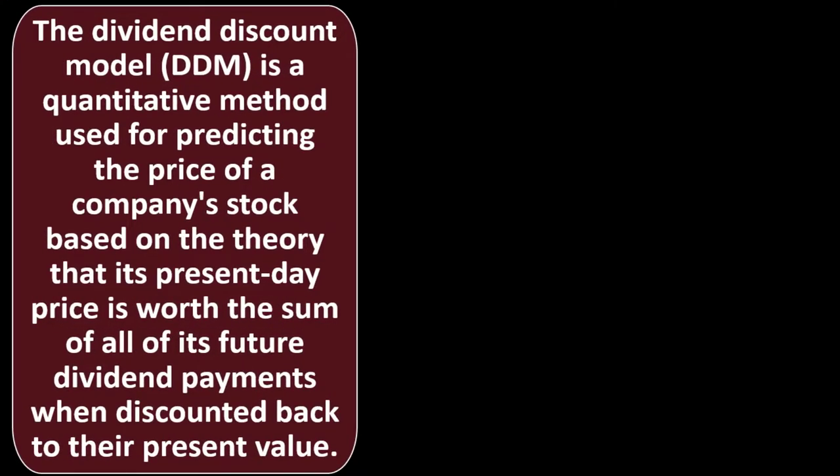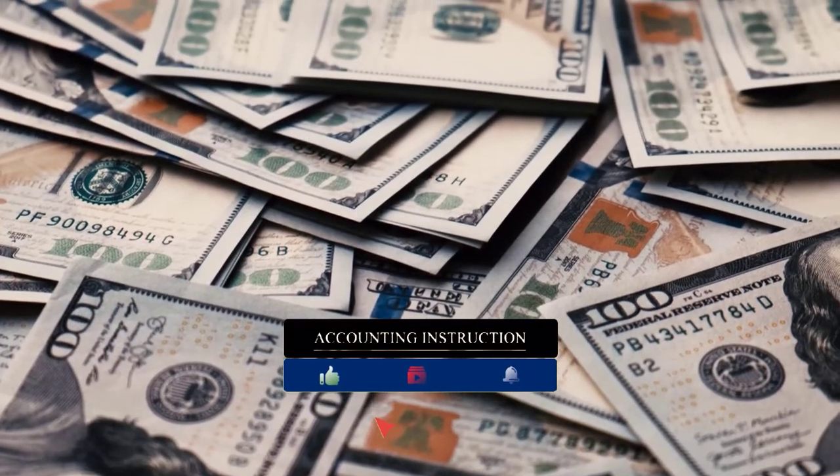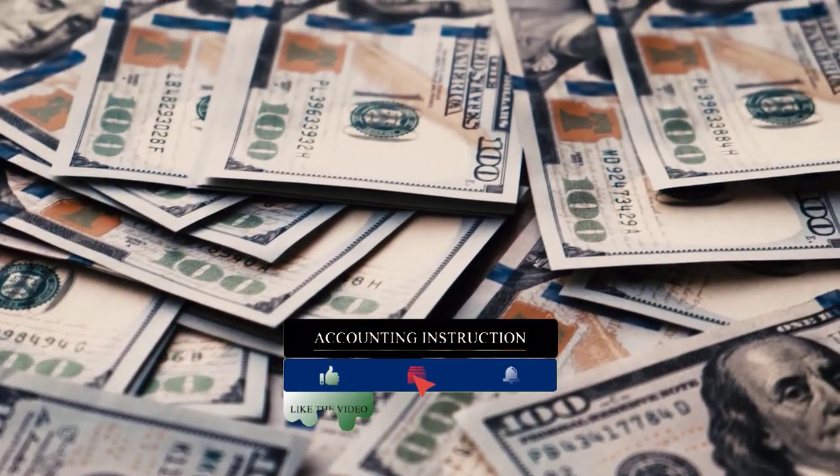With that in mind: what is the Dividend Discount Model? The DDM is a quantitative method used for predicting the price of a company's stock based on the theory that its present-day price is worth the sum of all its future dividend payments when discounted back to their present value.